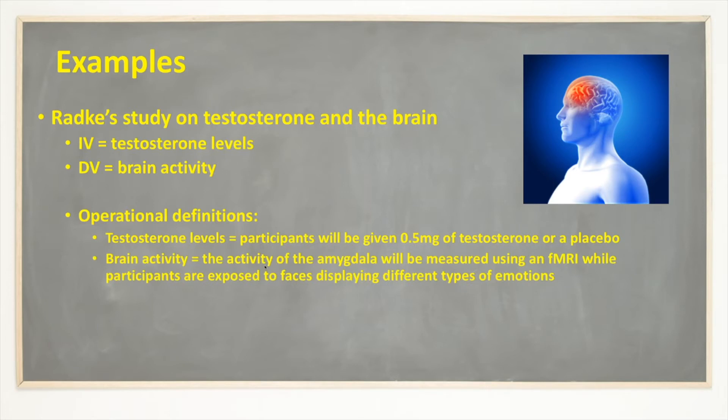The brain activity is measured, the operational definition, the activity of the amygdala was measured using fMRI while participants are exposed to faces displaying different types of emotions. Now, I would probably even in here, I could put brackets, what types of emotions they are.